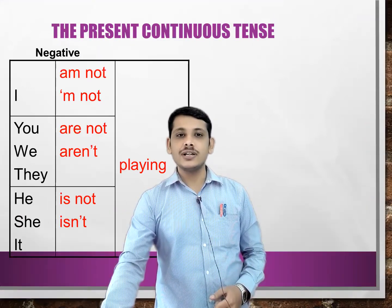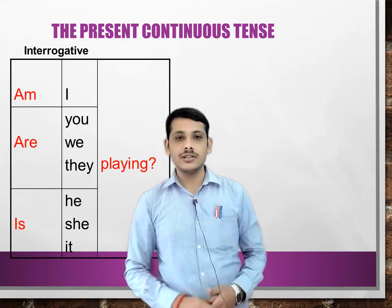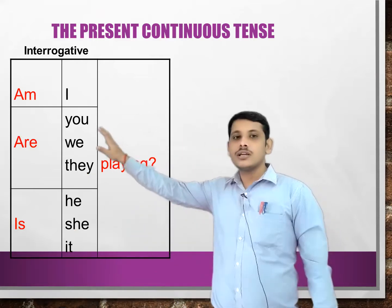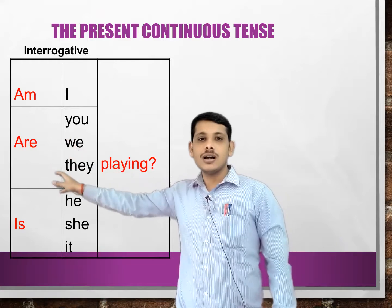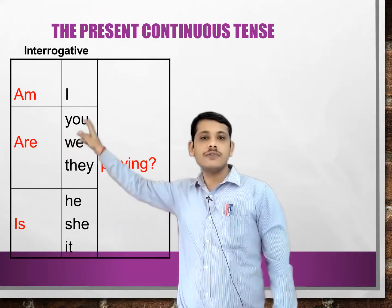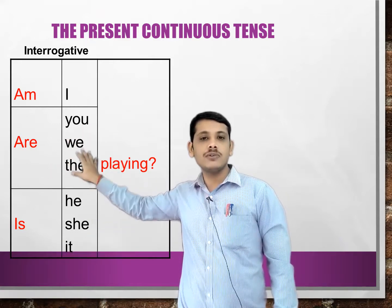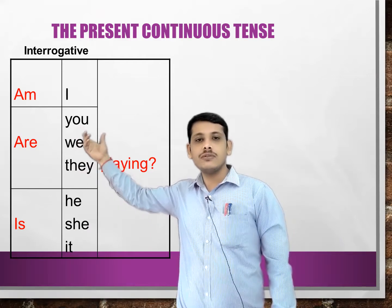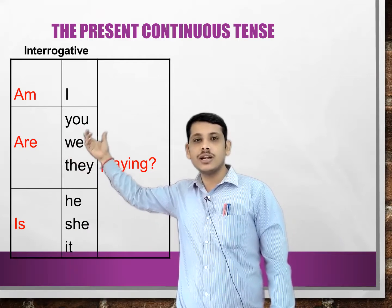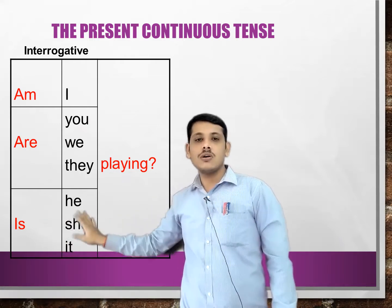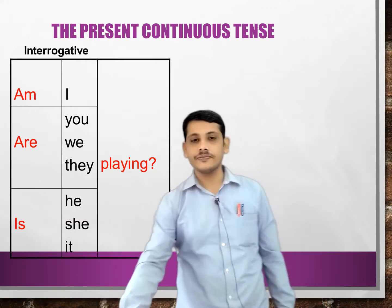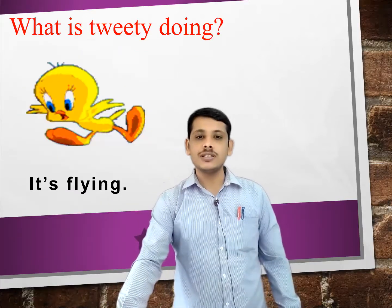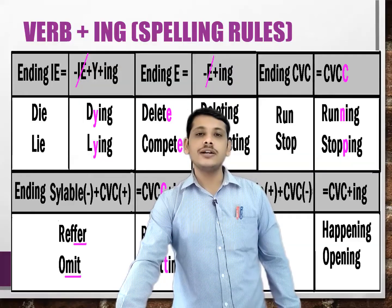We have seen the use of present continuous tense in affirmative, negative, and interrogative sentences. An important thing to remember is that the helping verbs 'am', 'are', and 'is' are used. 'Am' is used with 'I'. 'Are' is used with plural subjects and also with 'you', even if it's singular. 'Is' is used for all singular subjects.